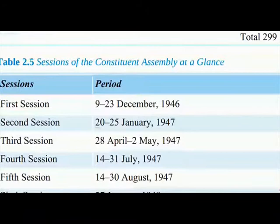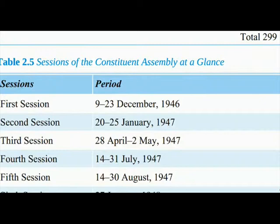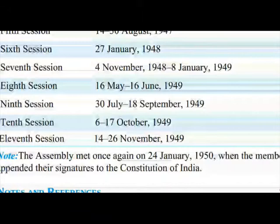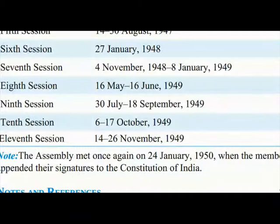Table 2.5 — Sessions of the Constituent Assembly at a glance: 1st Session: 9–23 December 1946. 2nd Session: 20–25 January 1947. 3rd Session: 28 April–2 May 1947. 4th Session: 14–31 July 1947. 5th Session: 14–30 August 1947. 6th Session: 27 January 1948. 7th Session: 4 November 1948–8 January 1949. 8th Session: 16 May–16 June 1949. 9th Session: 30 July–18 September 1949. 10th Session: 6–17 October 1949. 11th Session: 14–26 November 1949.